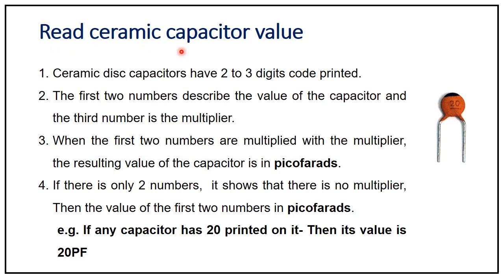To read a ceramic disk capacitor value: ceramic disk capacitors have 2 to 3 digit codes printed on them. The first two digits describe the value of the capacitor and the third digit is the multiplier.